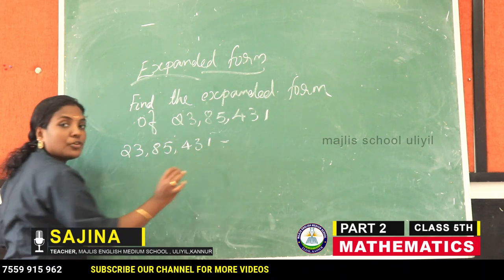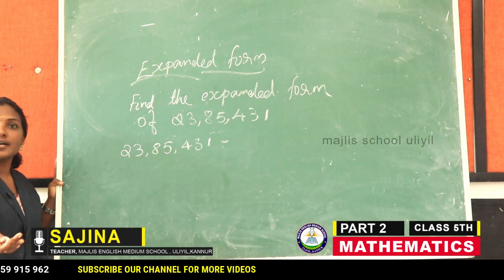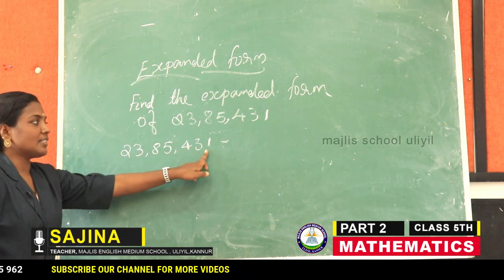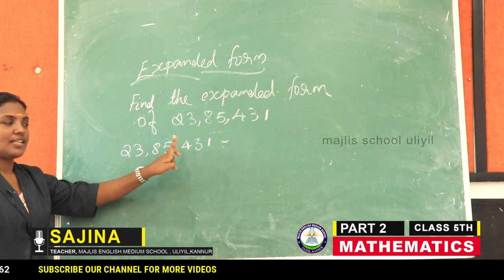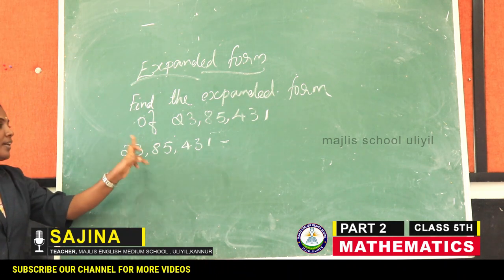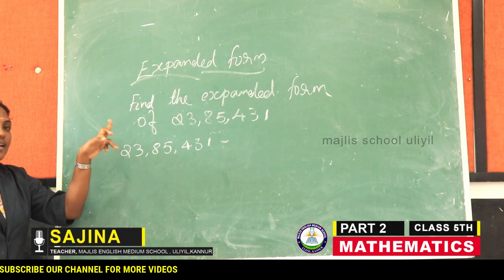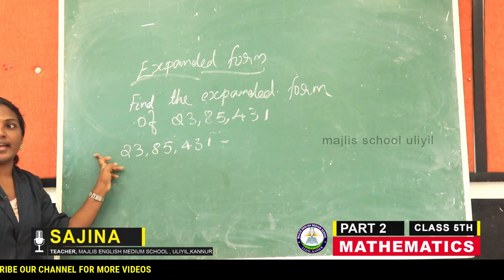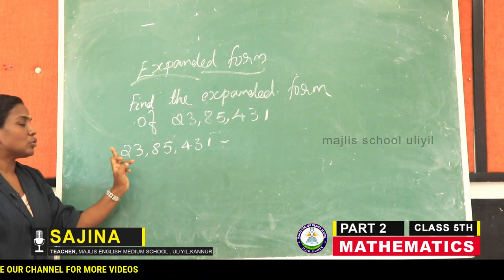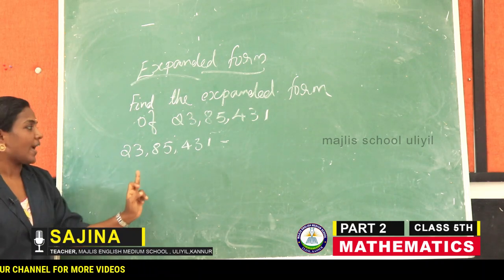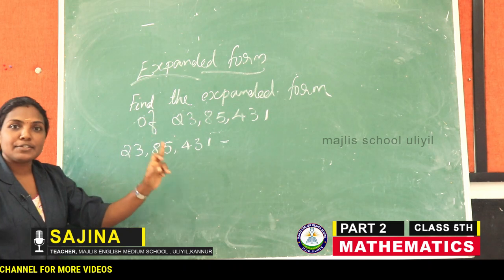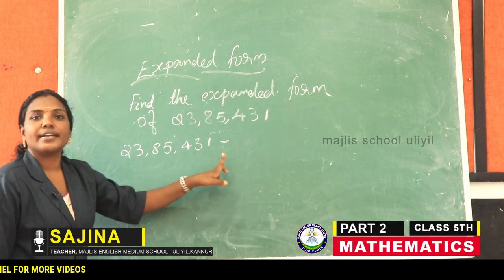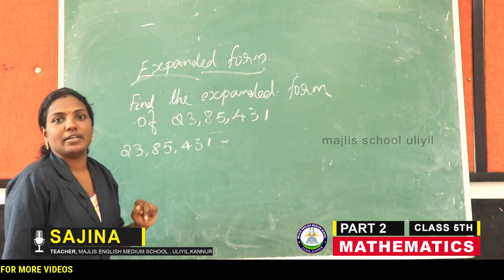How to read this number? Ones, tens, hundred, thousand, ten thousand, lakh, and ten lakh. Therefore, twenty-three lakh, eighty-five thousand, four hundred, thirty-one.